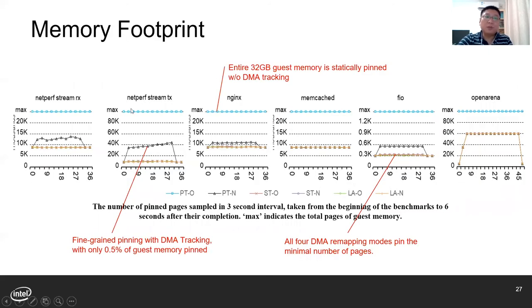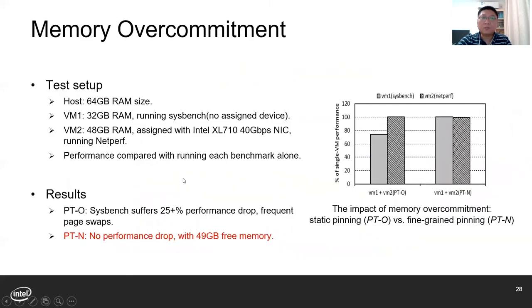For memory footprint — the number of guest pages pinned in different benchmarks — you can see that when DMA remapping is disabled, the entire guest memory needs to be statically pinned without features like DMA tracking. With DMA tracking, only 0.5% of guest memory is pinned. We also evaluated the impact of memory over-commitment with static pinning versus fine-grained pinning. With fine-grained pinning, there is no performance drop, and there is quite some free memory in the host. Please refer to the paper for detailed description of this experiment.